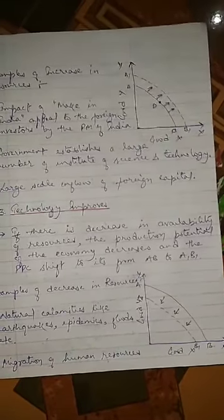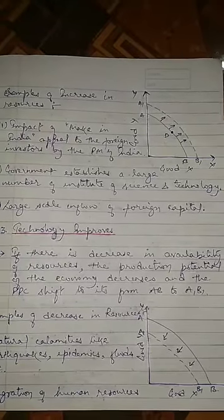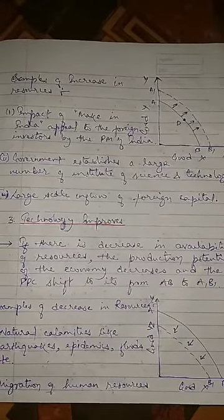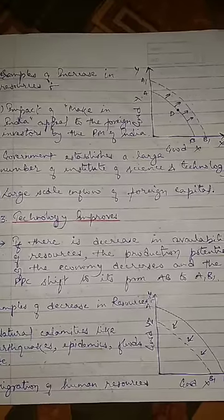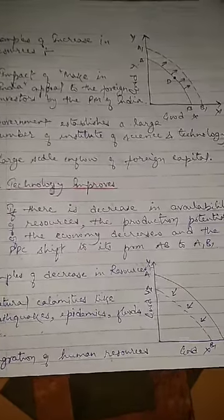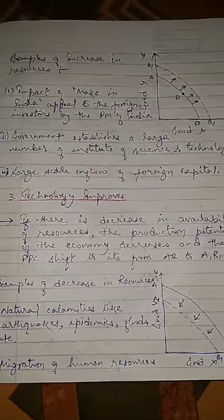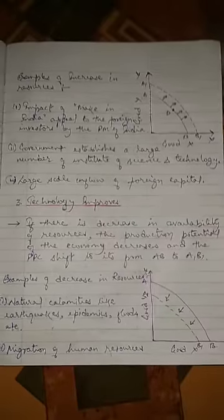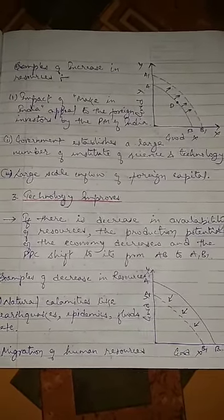Examples of increase in resources include: the 'Make in India' scheme launched by Prime Minister Narendra Modi to appeal to foreign investors, government establishing a large number of institutions of science and technology, and large-scale inflow of foreign capital. Third, technology improves — with technological advancement, production of both goods can be increased, therefore causing a rightward shift in PPC. Due to advancement of technology or increase in resources, the PPC will shift to its right.